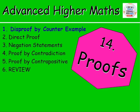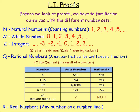We started this chapter off looking at disproof by counterexample, but before we got into that, you have to familiarise yourself with the different number sets because this crops up all the time in the proofs chapter. You need to know that N is your natural numbers — your counting numbers, 1, 2, 3, 4, 5, and so on. Whole numbers also include zero. Z is your integers, which are your positive or negative whole numbers. Your rational numbers are numbers that can be written as a fraction. And R is your set of real numbers, which is really just any number that doesn't go into imaginary or complex numbers.